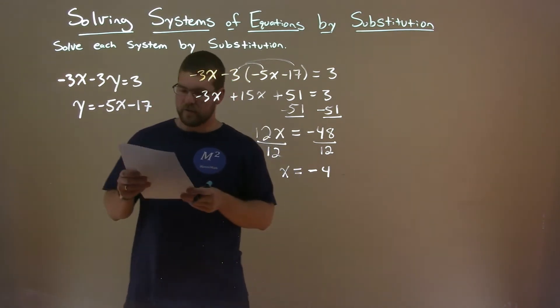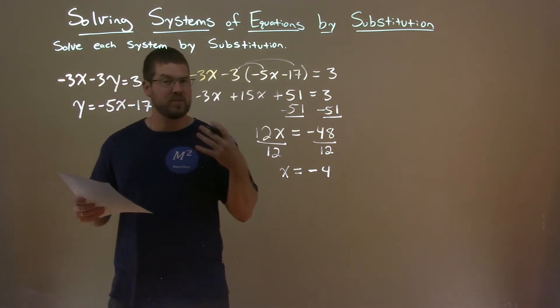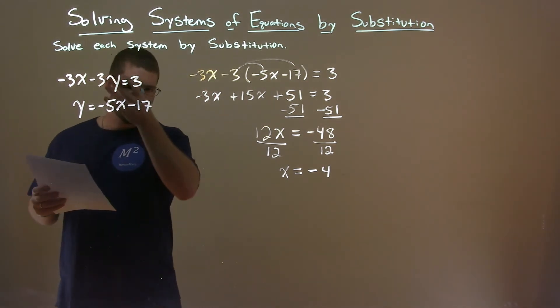So we have x equals negative 4, and we're going to take that information and plug it into the second equation because it looks easier. We could pick either one, but let's choose the second.